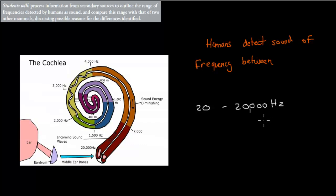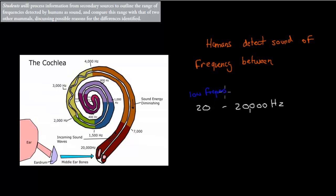I briefly mentioned in the last couple of videos what kind of frequencies of sound we humans can hear. Our lower frequency limit is about 20 Hz, which means low pitch, and our high frequency limit is about 20,000 Hz.